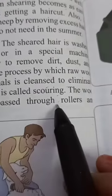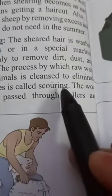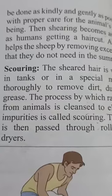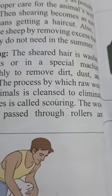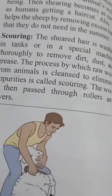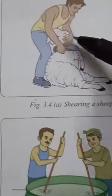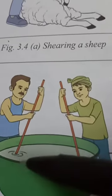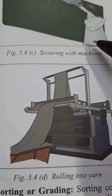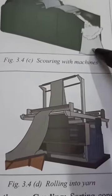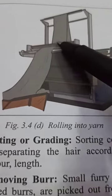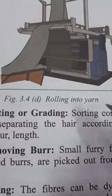After scouring, the wool is passed through rollers and dryers so that it dries up and is rolled. You can see here the shearing, then scouring by putting into a water tank, and finally passing through dryers and rollers to roll into yarn.